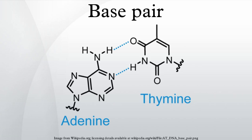Base analogues and intercalators: chemical analogues of nucleotides can take the place of proper nucleotides and establish non-canonical base pairing, leading to errors in DNA replication and DNA transcription. This is due to their isosteric chemistry. One common mutagenic base analogue is 5-bromouracil, which resembles thymine but can base pair to guanine in its enol form.